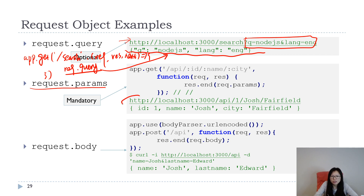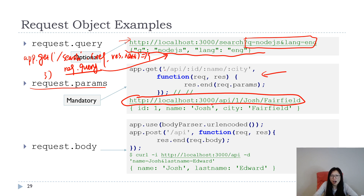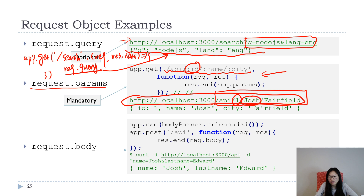The next one is request parameters. Suppose this is your URL and we have a middleware to handle this URL. Look at the URL pattern: after '/app' we have '1', and the colon ID is a placeholder for that segment. 'Josh' is another segment held by a placeholder, and 'field' is held by colon city. Using request.params will return an object for this part.